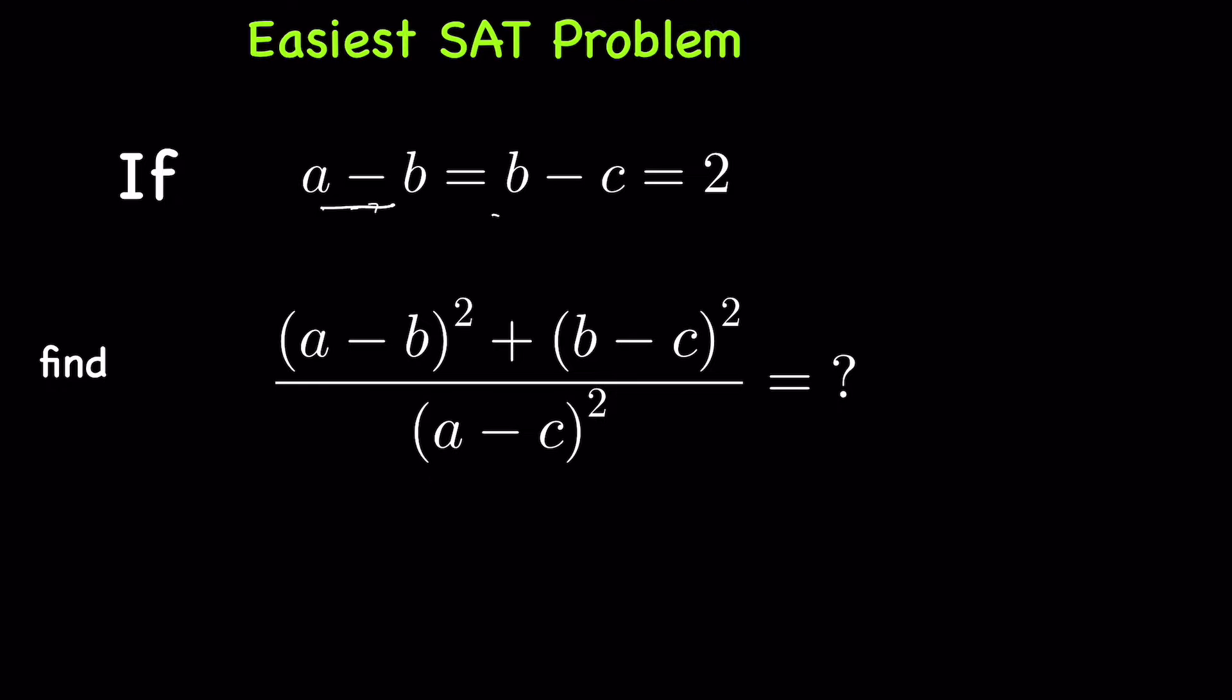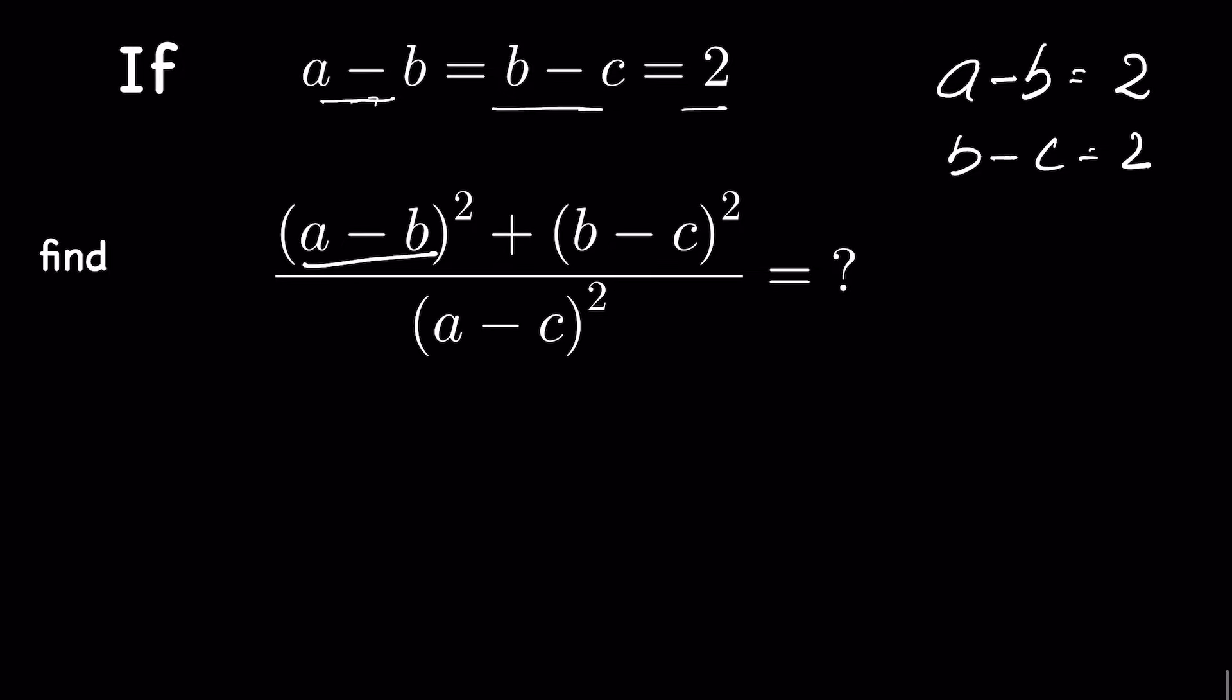So A minus B is equal to B minus C is equal to 2, that means A minus B is equal to 2 and B minus C is equal to 2. So here for A minus B whole square we can write 2 square plus B minus C whole square we can write 2 square, then upon A minus C whole square.